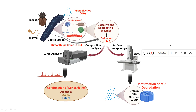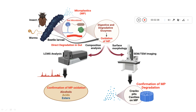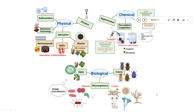Similarly, here is another image I created showing microplastics degradation by beetle larvae and insects. Inside the diagram, I've shown the gut microbiota within the larvae involved in plastic degradation. Once microplastics are present, you can check their composition using LCMS analysis, and surface morphology using SEM. The cracks visible on the microplastic surface confirm the degradation — all of this can be shown using BioRender.